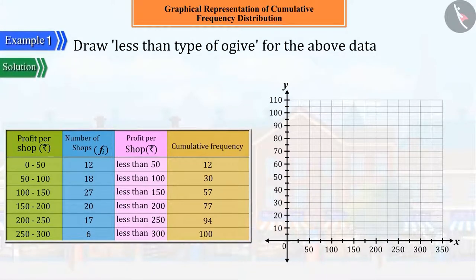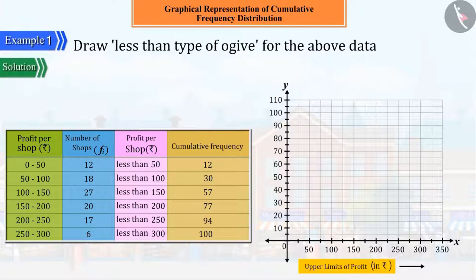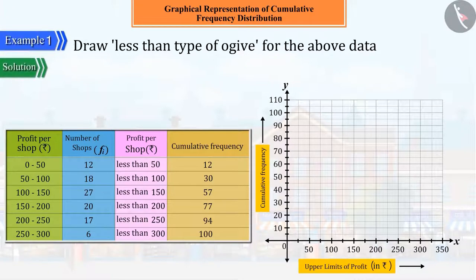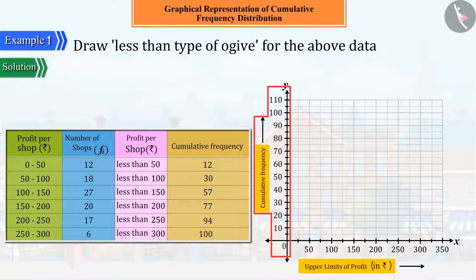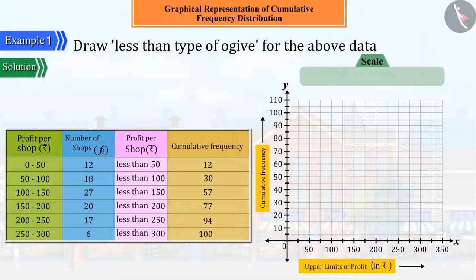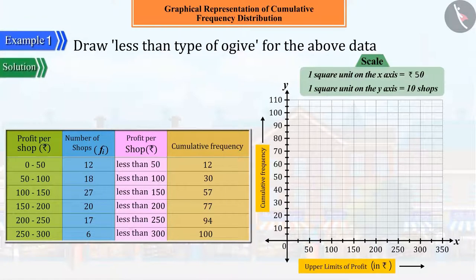To represent the data from the obtained distribution table graphically, mark the upper limits of profit on the x-axis in rupees and cumulative frequencies on the y-axis. Here, we take one square unit on the x-axis equal to 50 rupees and one square unit on the y-axis equal to 10 shops.